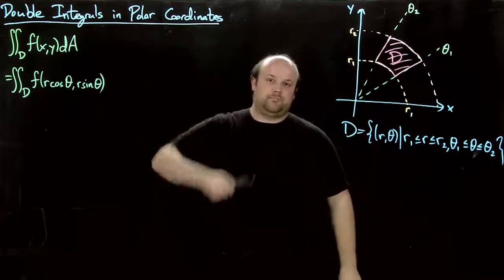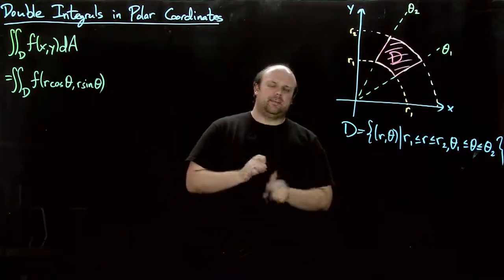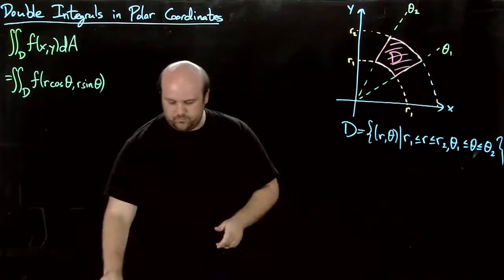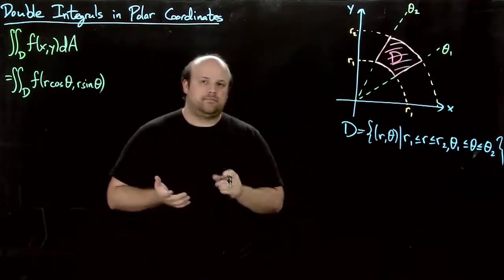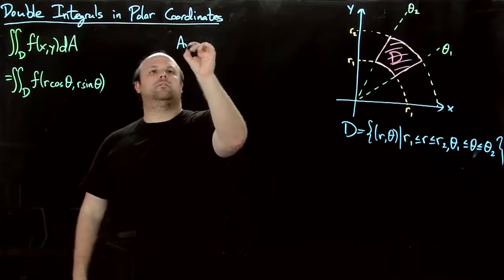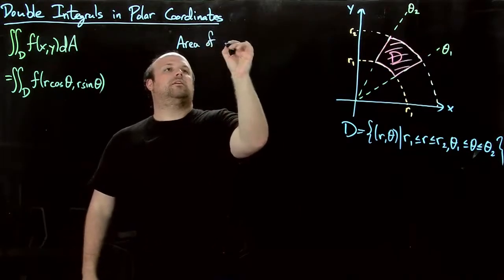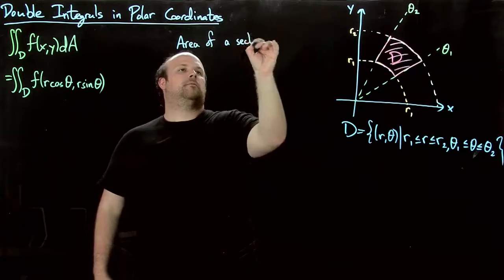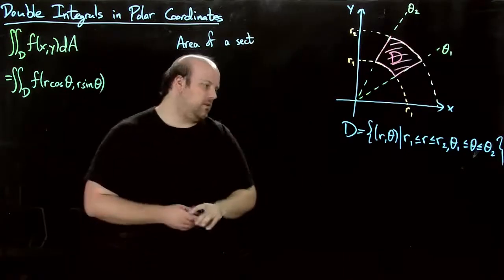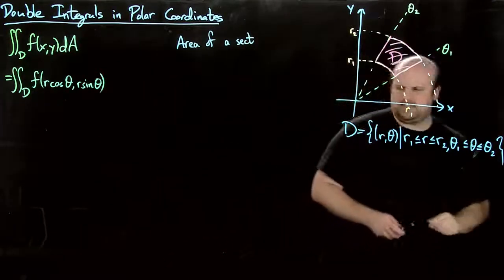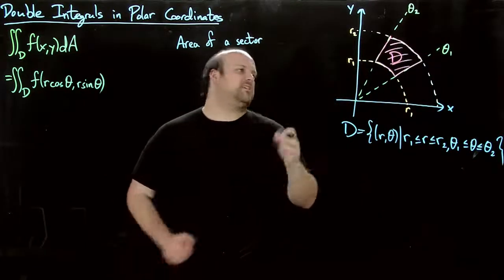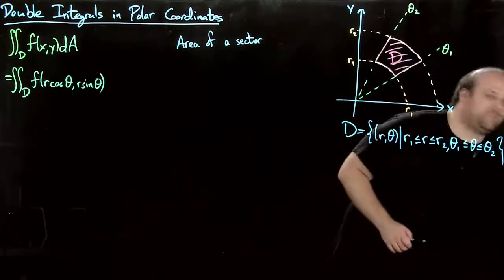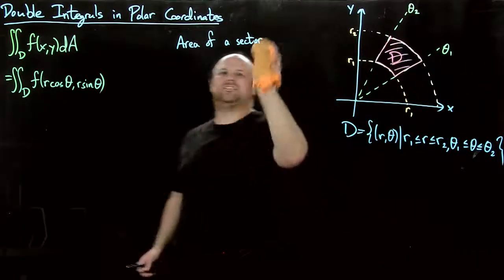We want to figure out the area then of one of these, because that's where dA comes from. So how do we get the area of that? Well, remember, the area of a sector or, I think it is sector. Or let's say a wedge, because I don't remember what the proper terminology is.